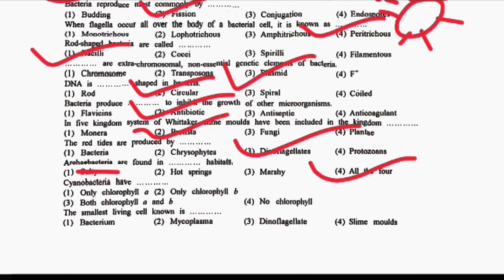Next question: which chlorophyll do cyanobacteria have? Option 1: Only Chlorophyll A. Option 2: Only Chlorophyll B. Option 3: Both Chlorophyll A and B. Option 4: No Chlorophyll. Cyanobacteria are also known as photosynthetic bacteria, so the correct answer is Option 1, that is only Chlorophyll A.